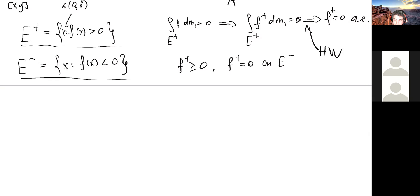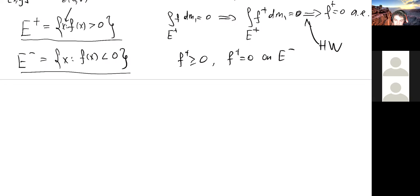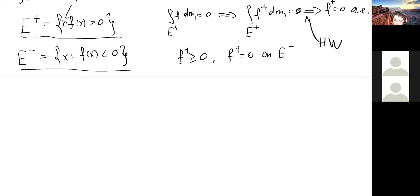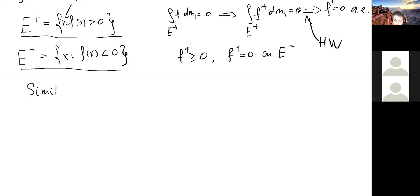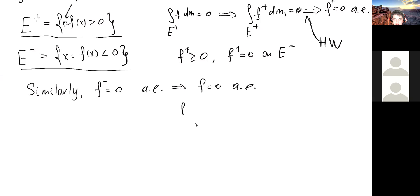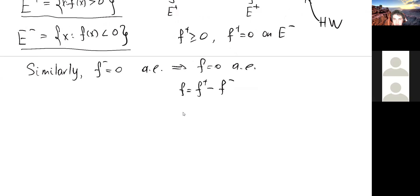Similarly, f− is zero almost everywhere. This implies f is zero almost everywhere, because f = f+ − f−.